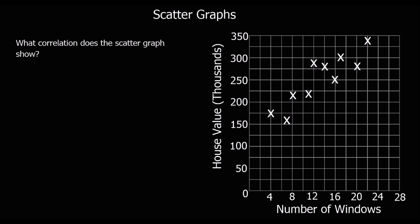Here we've got a scatter graph. The thing with a scatter graph is each of the crosses represents a piece of data. So this cross here is a house with four windows, valued at 175,000. And so what we can see from a scatter graph is a relationship.